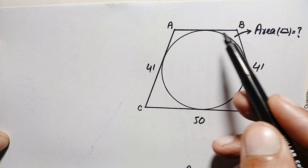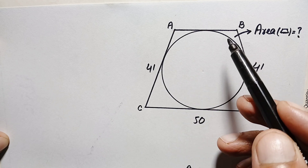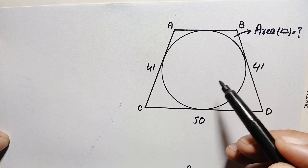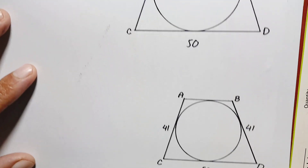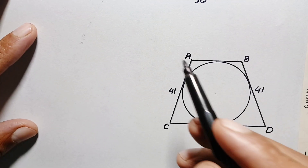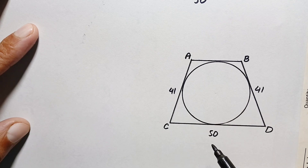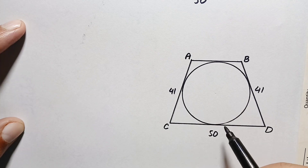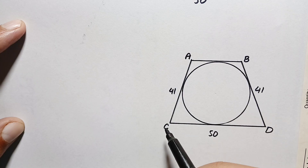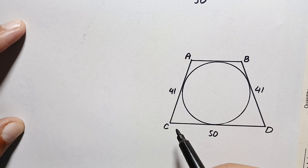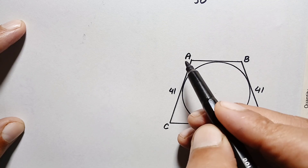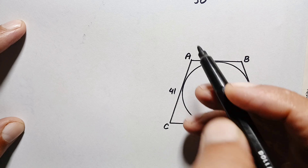First we will try to find out side AB. In this figure we will use a result — the tangents-to-a-circle theorem. In this same figure of trapezoid ABCD, where the two legs are equal, we apply the result that if we have two tangents from an external point to a circle, then the lengths of those tangents will be equal. At point A we have two such tangents.